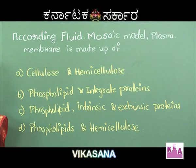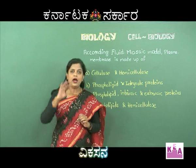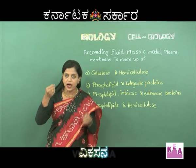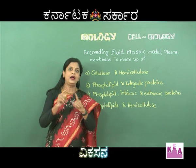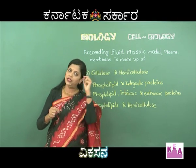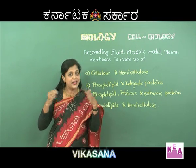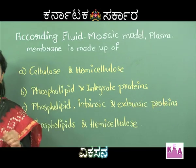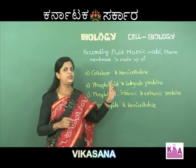The first option is cellulose and hemicellulose. The second option is phospholipids and integral proteins. The third option is phospholipids, intrinsic and extrinsic proteins. The fourth option is phospholipids and hemicellulose. Cellulose is found in plant cells - the plant cell wall is made up of cellulose, and its secondary layers are made up of hemicellulose. So this is ruled out because it is not a component of the plasma membrane. First option is not right.